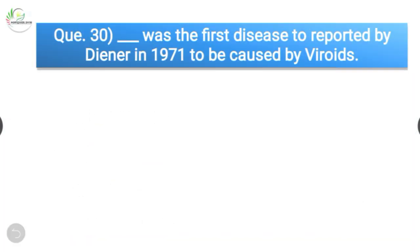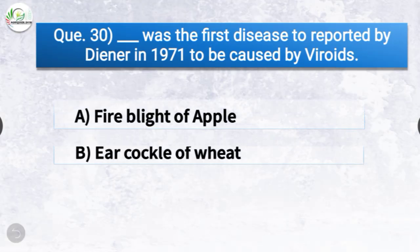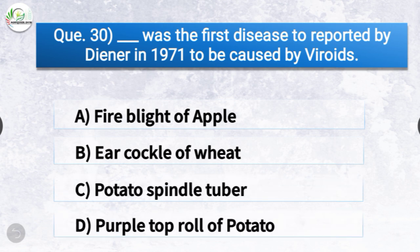Question number thirty: Dash was the first disease to be reported in 1971 to be caused by viroids. The options are fire blight of apple, ear cockle of wheat, potato spindle tuber, or purple top roll of potato. The correct answer is option C, potato spindle tuber. Potato spindle tuber was the first disease reported by Diner in 1971 to be caused by viroids.